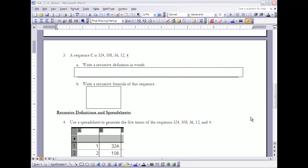Let's take a look at number 3. It says a sequence C is 324, 108, 36, 12, and 4. Write a recursive definition in words. If I'm going to write a recursive definition in words, there's two things that I want to think about: first of all, what's the first term, and secondly, what's being done to the previous term to get the next term. As I look at this sequence, the first term is 324. And sometimes it might be easier to see it towards the end.